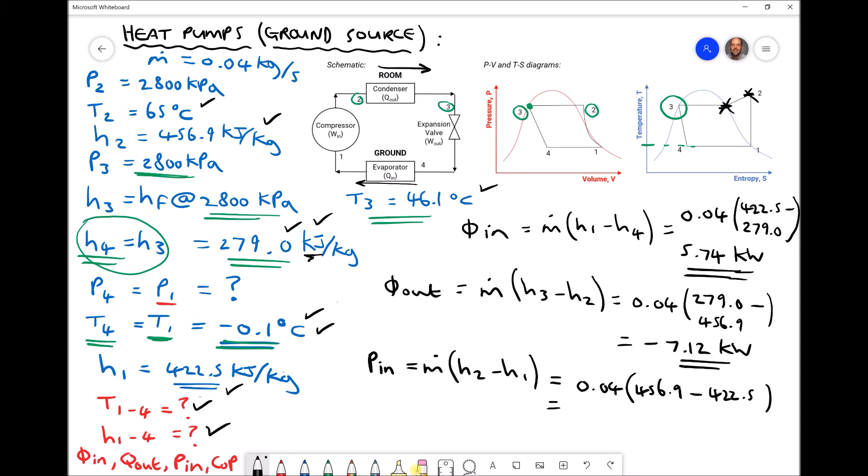Giving us a rate of work done on the fluid equal to 1.376, or 1.38 kilowatts to be consistent with our use of two decimal places here.